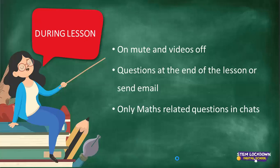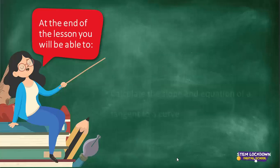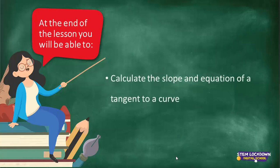Continuing from what we did yesterday — at the end of this lesson you'll be able to calculate the slope, which is the gradient, and the equation of a tangent. Remember, a tangent is a line. So you'll be able to calculate the slope and equation of a tangent to a curve. We're still working on limits.